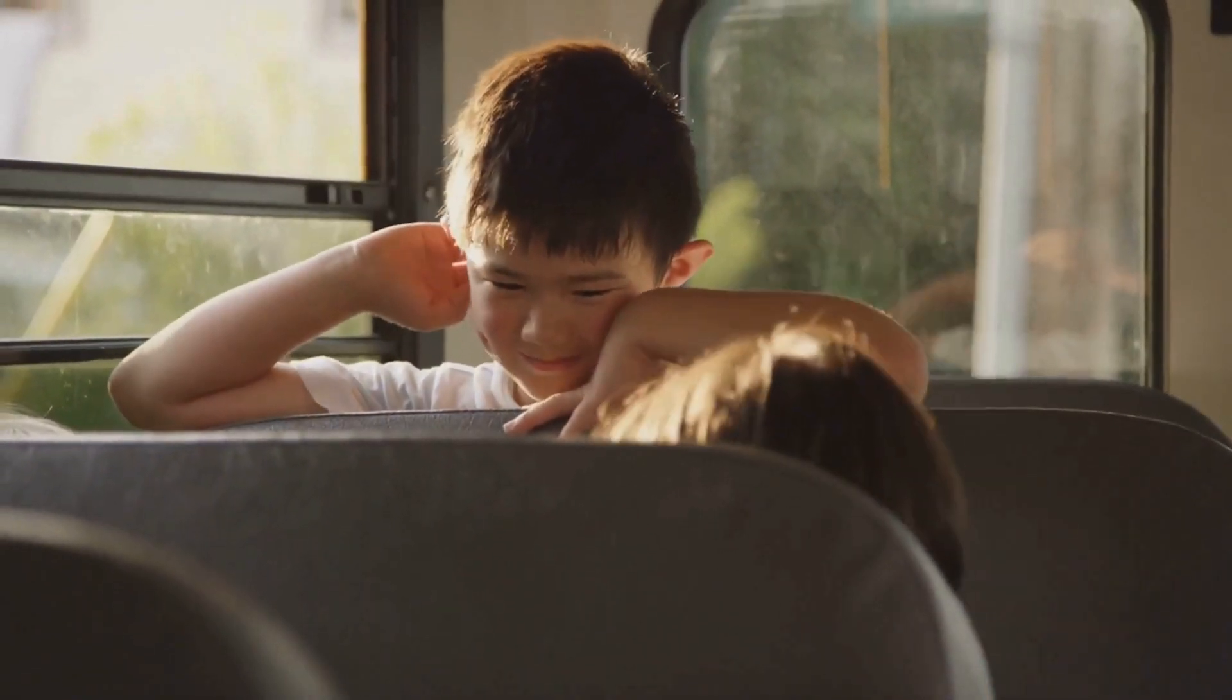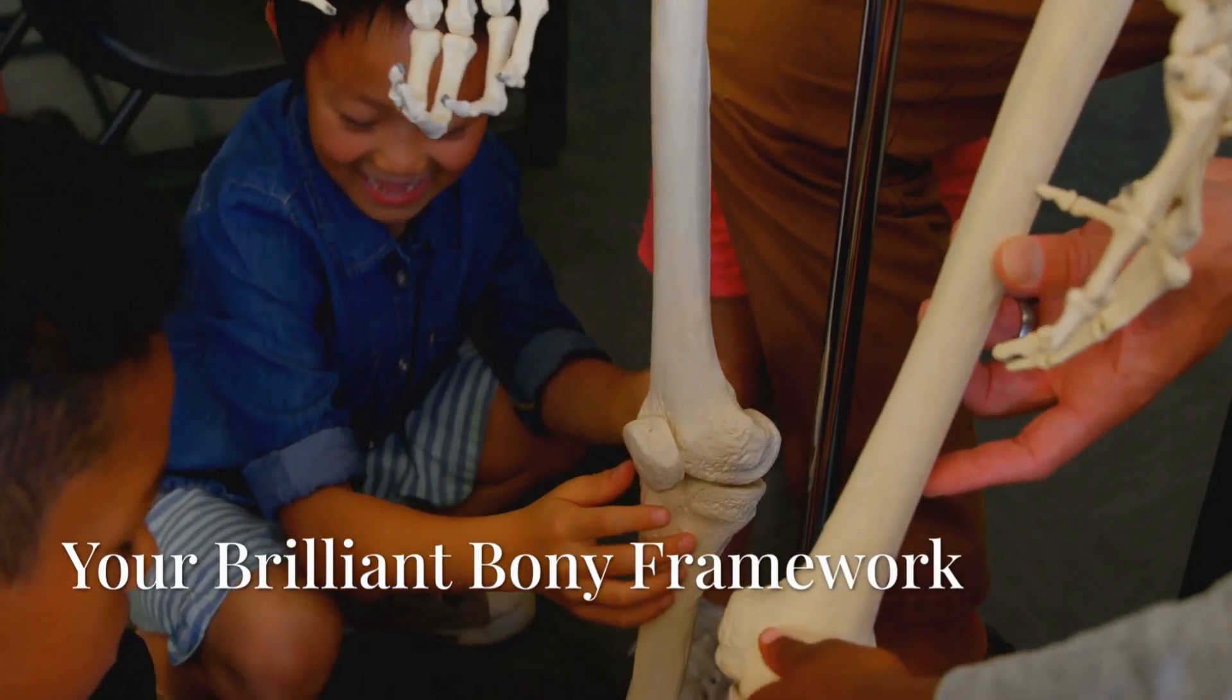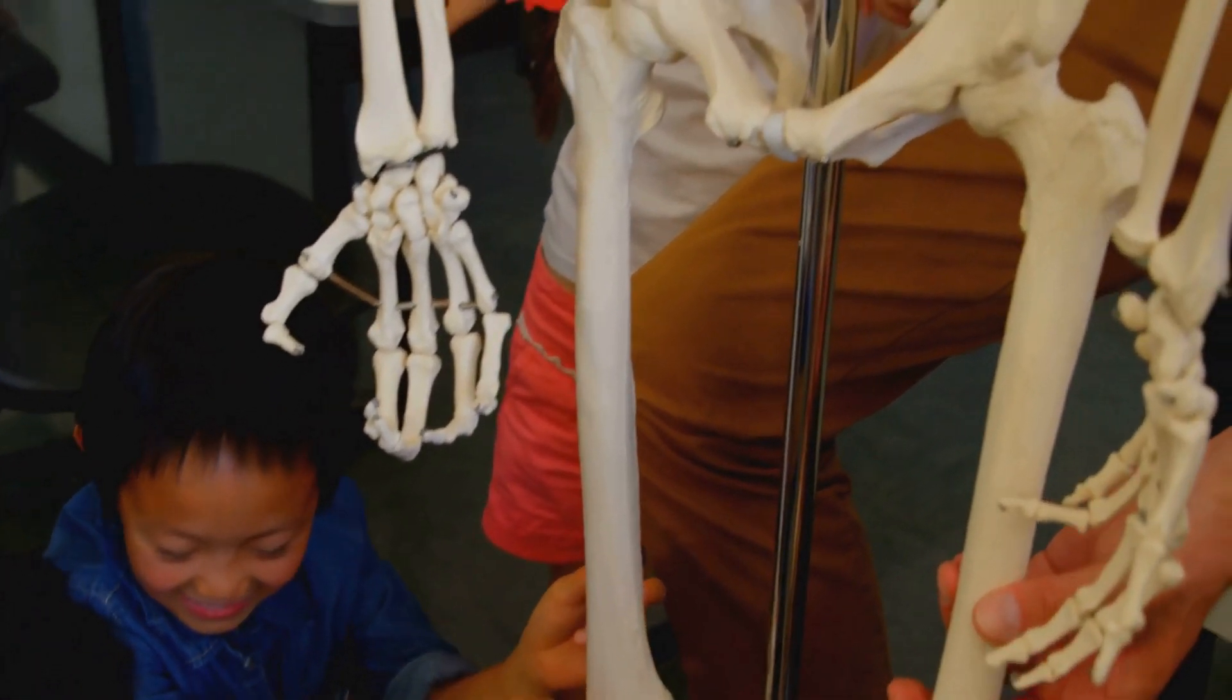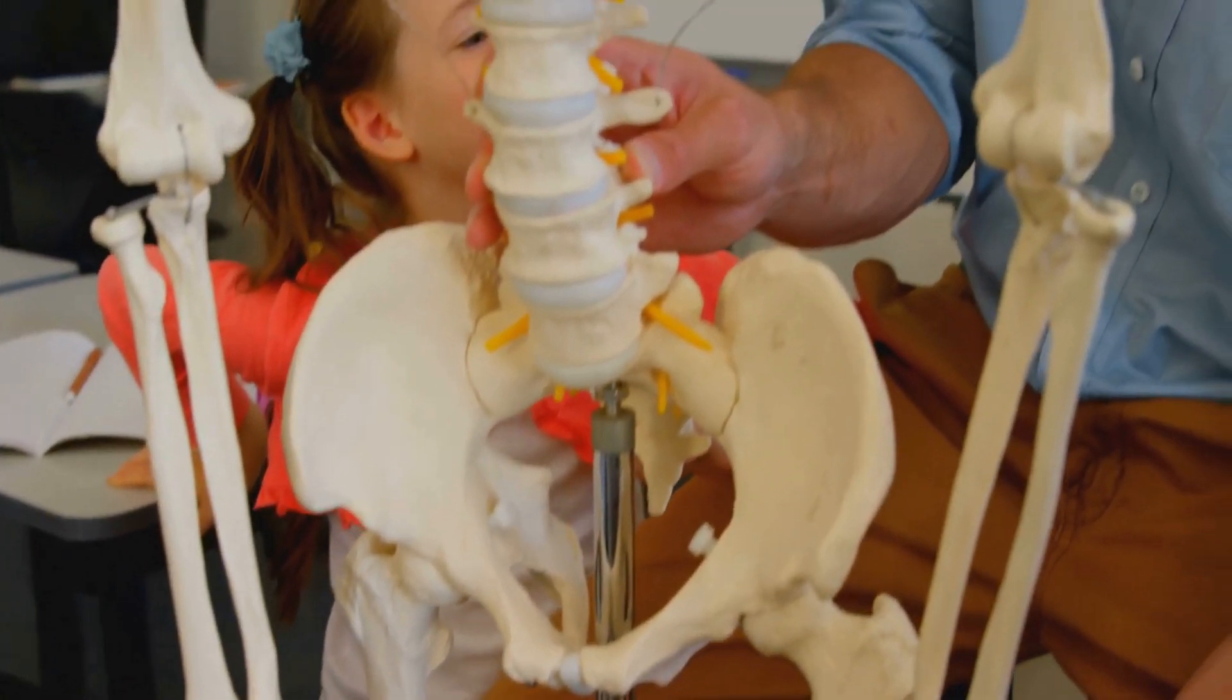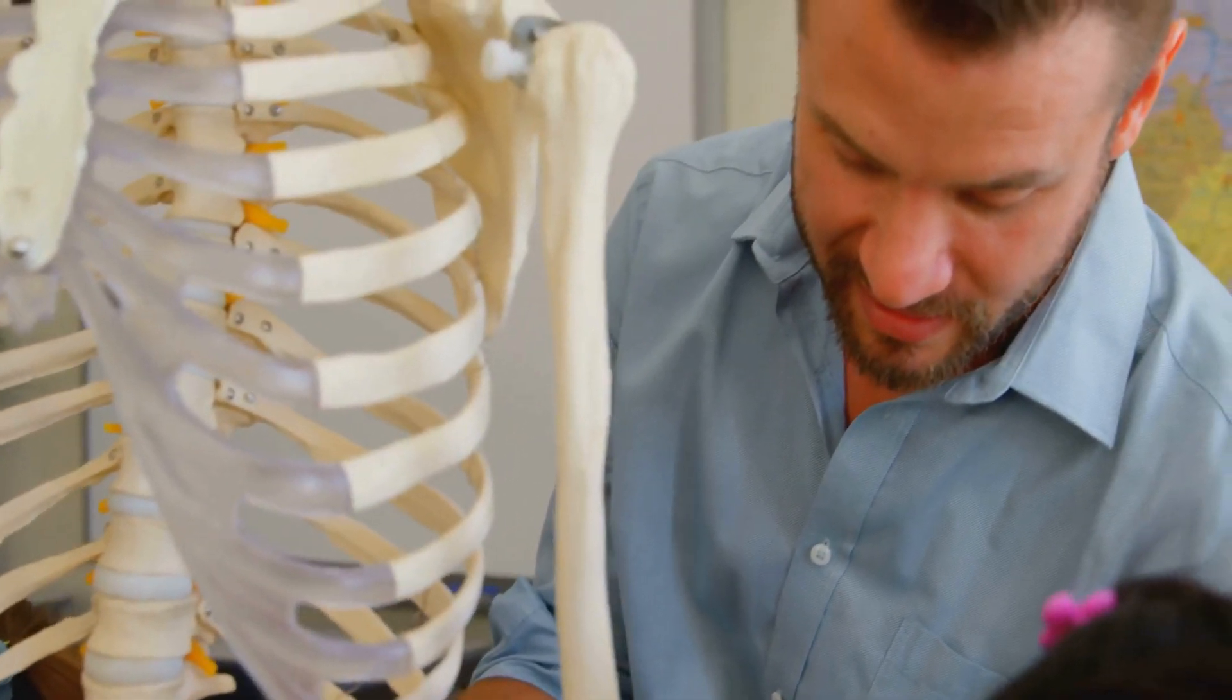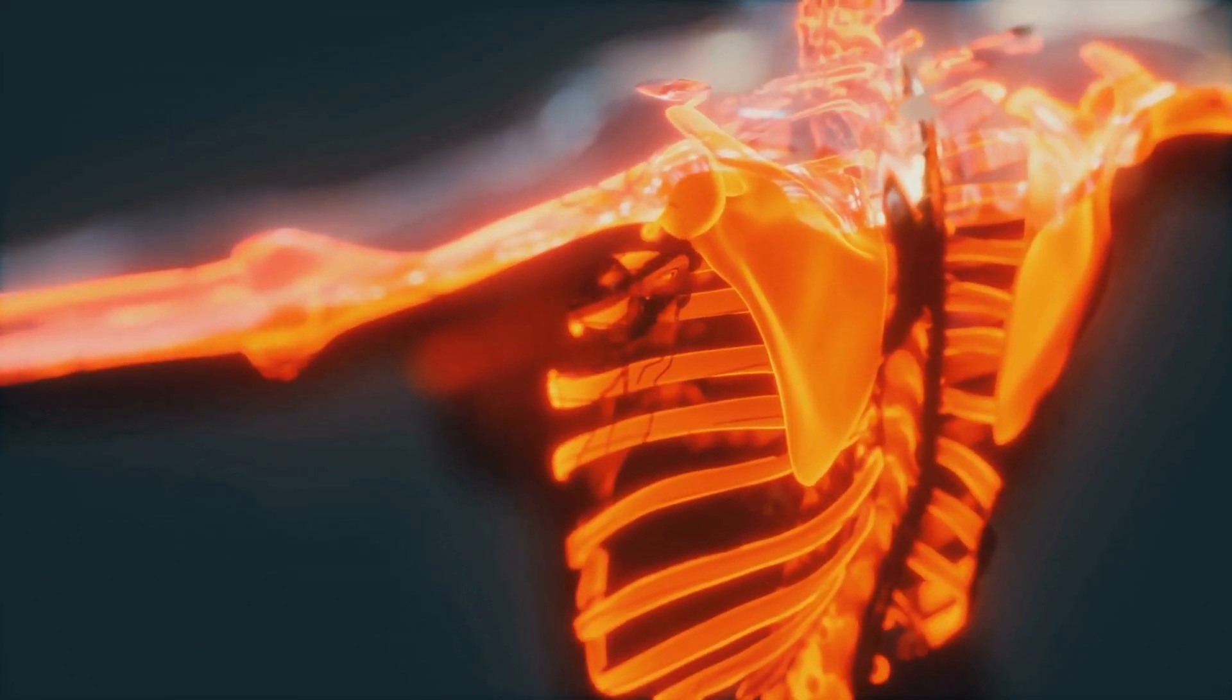First stop: the skeleton. This amazing structure is hidden beneath your skin, but it's working hard every single day to keep you standing tall and moving around. Imagine your body as a building. Your skeleton is the strong frame that holds everything together. Did you know grown-ups have 206 bones? That's a lot of pieces working together.